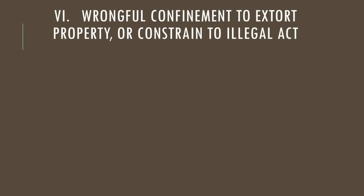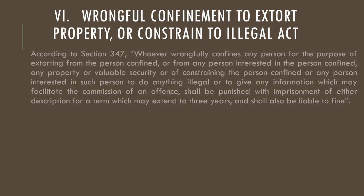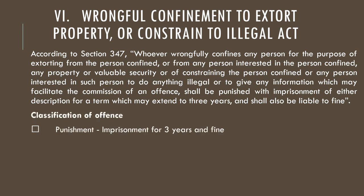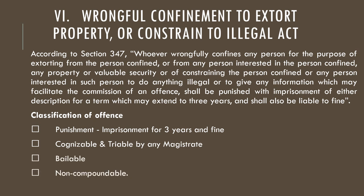The sixth category is wrongful confinement to extort property or to constrain to an illegal act, mentioned under Section 347. It explains that whoever wrongfully confines any person for the purpose of extorting from the person confined or any person interested in the person confined, or to do any illegal act or to give any information which may facilitate the commission of an offence, shall be punished with imprisonment of either description for a term which may extend to three years and shall also be liable to fine. Classifications: imprisonment for three years and fine; cognizable and triable by any magistrate; bailable; and non-compoundable.